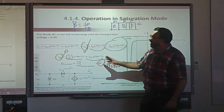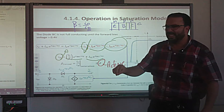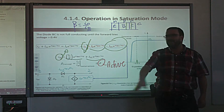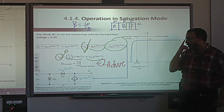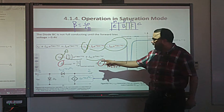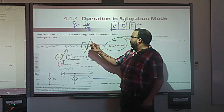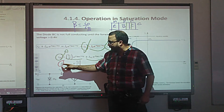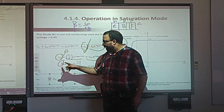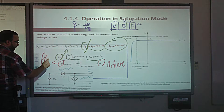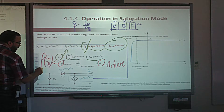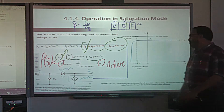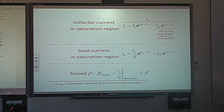Pay attention: beta in active mode is independent of currents — it's a characteristic of the BJT fabrication, a constant between 50 and 200 given in the datasheet. However, in saturation, beta becomes 'beta forced,' which depends on the currents IC and IB. It is a function of these currents, so beta forced is not a characteristic of the BJT anymore — it is forced by the operating currents.